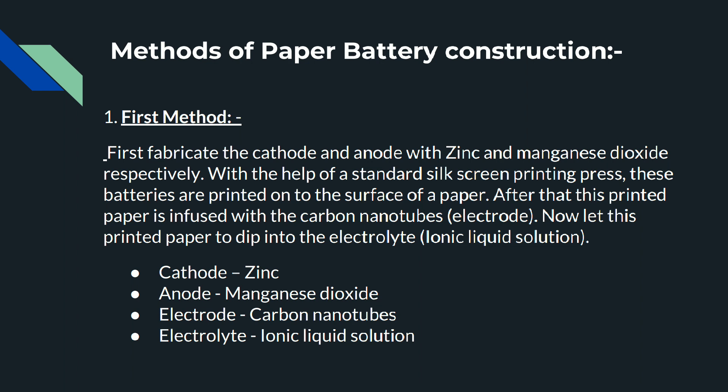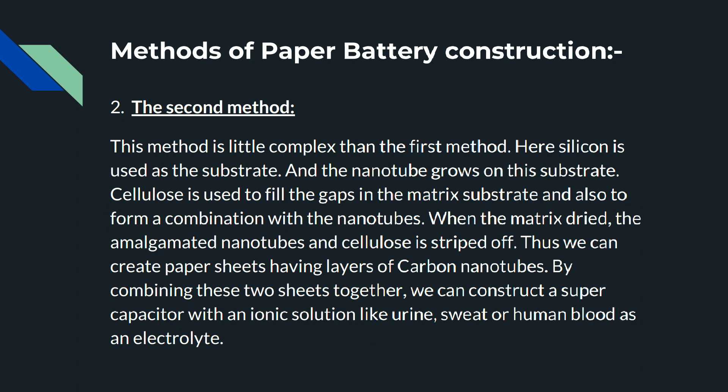The printed paper is then allowed to dip into the electrolyte ionic liquid solution. In this method, zinc is used as the cathode, manganese dioxide as the anode, carbon nanotubes as the electrode, and ionic liquid solution as the electrolyte. In the second method, silicon is used as the substrate and nanotubes grow on it. Cellulose fills the gaps in the matrix, and when dried, the amalgamated nanotubes and cellulose are stripped off to create paper sheets. Combining two such sheets forms a supercapacitor, using ionic solutions like urine, sweat, or human blood as electrolyte.